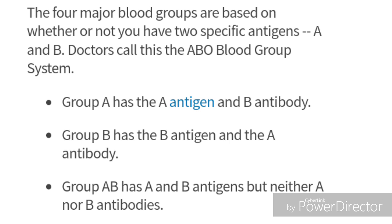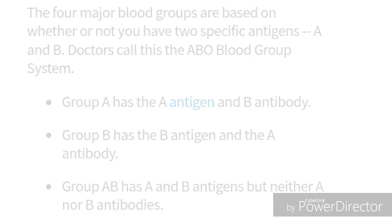Group A has A antigen and B antibody. Blood group B has B antigen and A antibody. Blood group AB has both antigens A and B but does not possess antibodies. Group O has both antibodies A and B but does not possess antigens. This is the fundamental difference between the four types of blood groups.